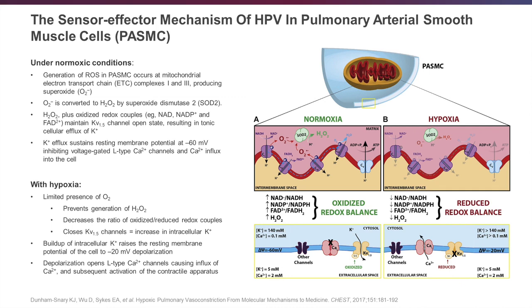Let's look at the pulmonary artery smooth muscle cell and better understand what causes contraction of the pulmonary artery smooth muscle cells and what kind of environment is necessary for that to happen. Under normal oxygen conditions, there's a generation of reactive oxygen species in the pulmonary artery smooth muscle cells, and that occurs at the mitochondrial level in the electron transport chain, namely in complexes 1 and 3.